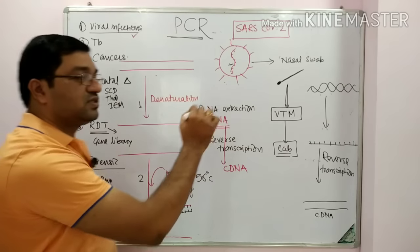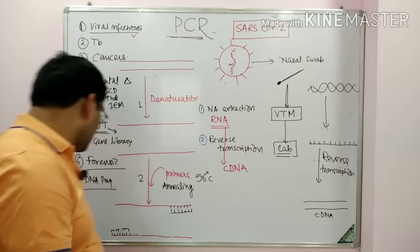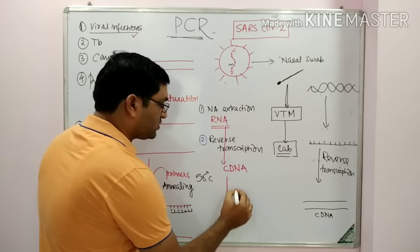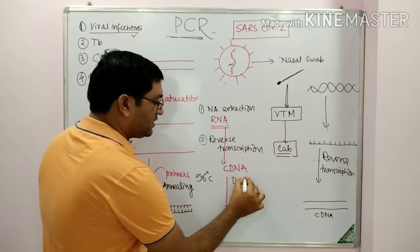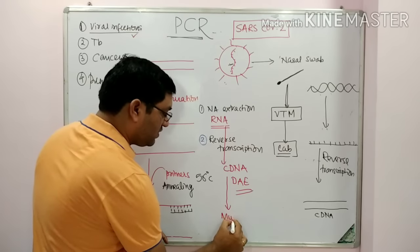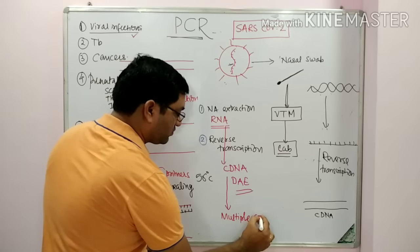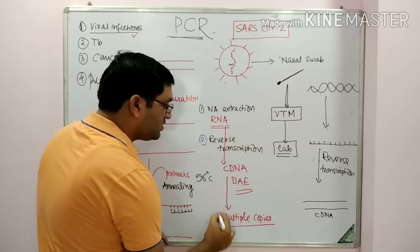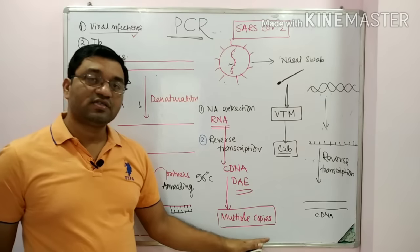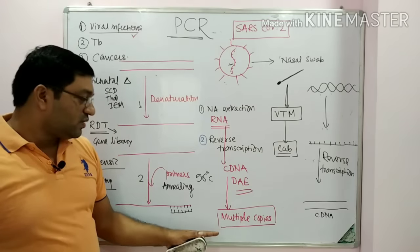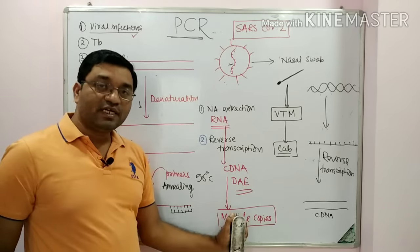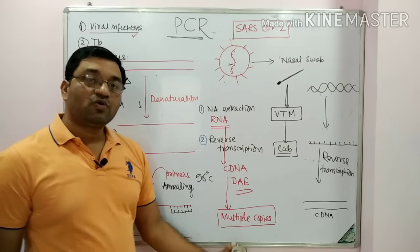Once the cDNA is produced, conventional PCR is done — denaturation, renaturation, and synthesis, or denaturation, annealing, and extension — and multiple copies of the viral sequence are produced. Depending upon the cycles required to reach desired levels of DNA, you can comment on the viral load. If fewer cycles are required, it means the viral load is much greater in the patient. If more cycles are required, the viral load is less.